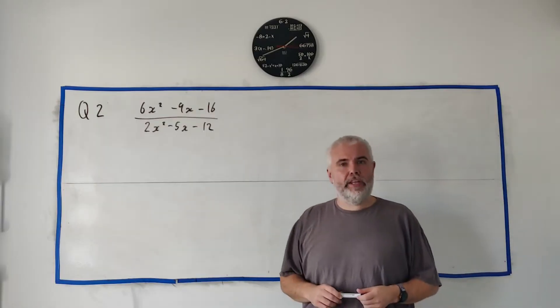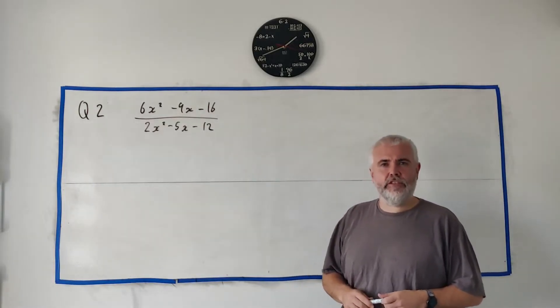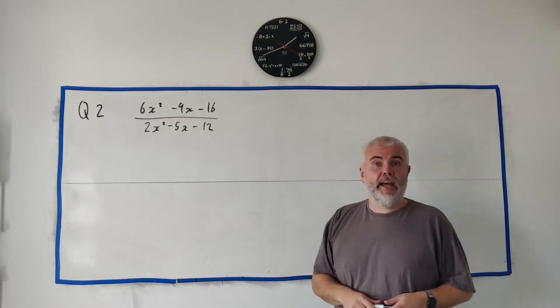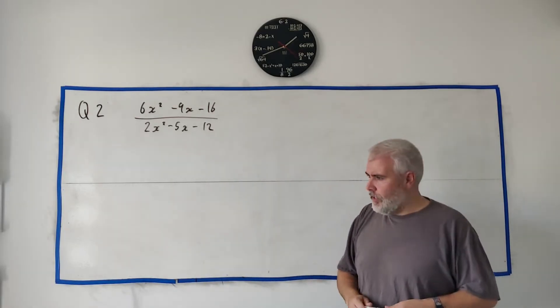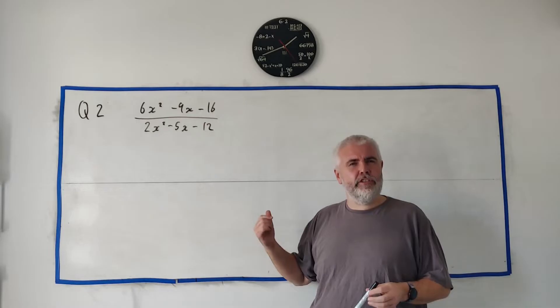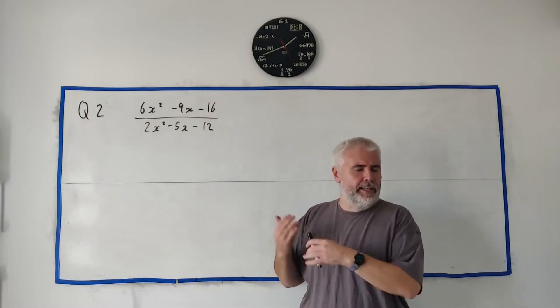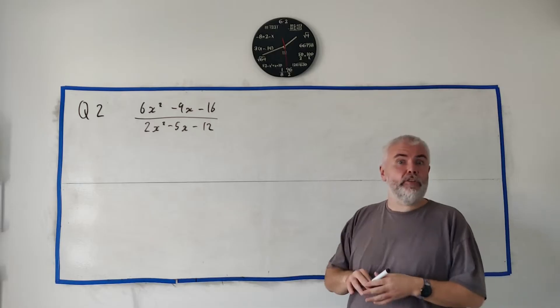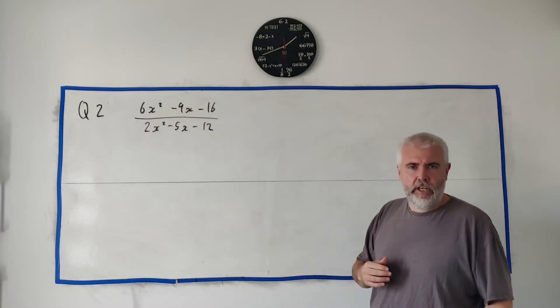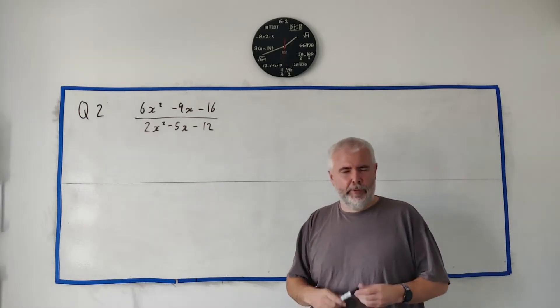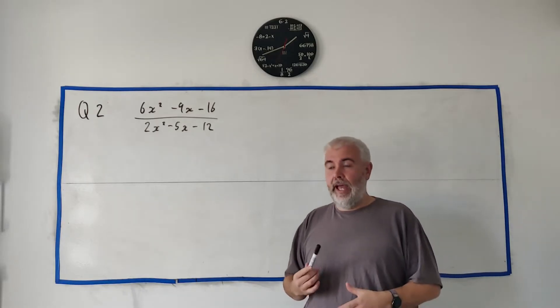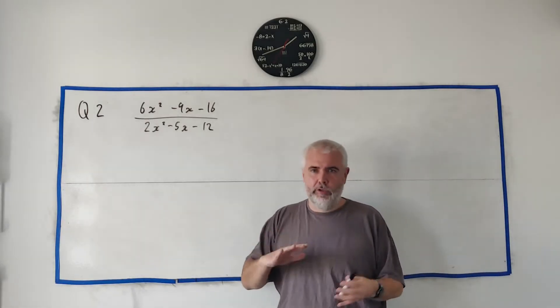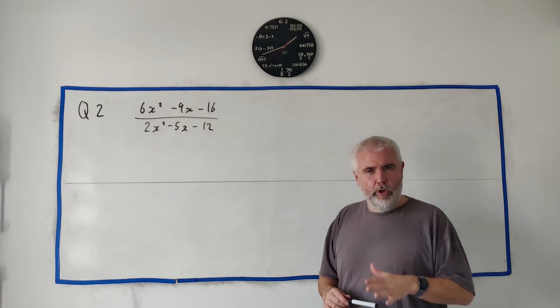This is all they give us in question two. And they simply ask us to express this term as partial fractions. Now there's going to be multiple different answers you can get. I'll explain why that is as we go. And at the end, I think it's three different answers. So I'll give you all three different answers, but I'm only going to show you how to get one of them. The other two will be very similar. So be warned about that. Your answer might be different than the answer I give.